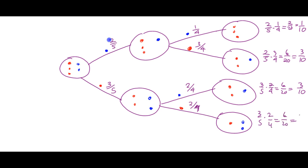What do all of these probabilities add up to? If you add all the final branch probabilities, you get one — ten out of ten. That has to happen because we've counted all that can possibly happen: blue then blue, blue then red, red then blue, and red then red. All probabilities in each column of the tree must add up to one.